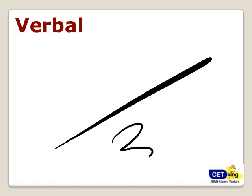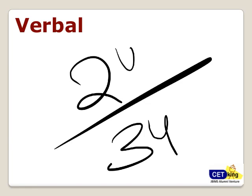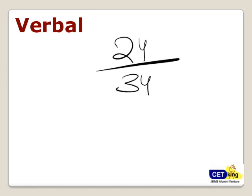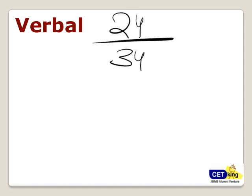Out of the 34 questions in the verbal section, 24 questions are going to be based on reading comprehension. This makes RC the most important area to score well in. In case you want to go to the IIMs, you have to crack RC.